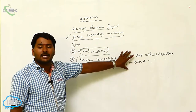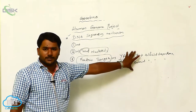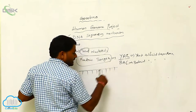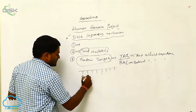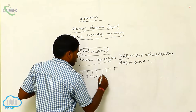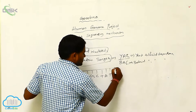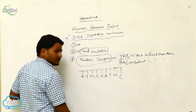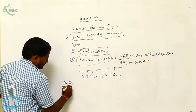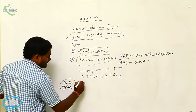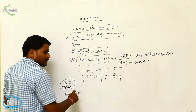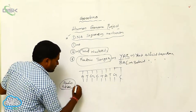Actually, these are all radioactive probes. For example, if some sequences are here on the DNA — sequences like T-A-G-C — if we use radioactive probes, these radioactive probes pair with the complementary nitrogen bases.